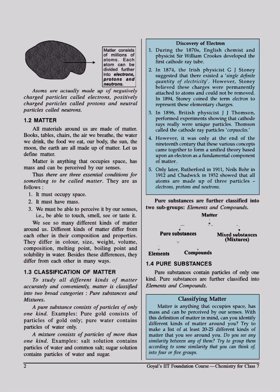Discovery of electron. During the 1870s, English chemist and physicist Sir William Crookes developed the first cathode ray tube. In 1874, the Irish physicist G.J. Stoney suggested that there existed a single definite quantity of electricity. However, Stoney believed these charges were permanently attached to atoms and could not be removed.